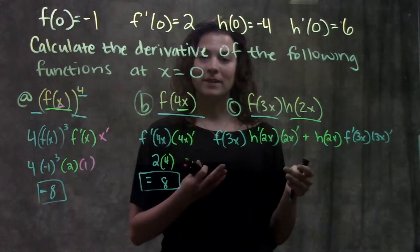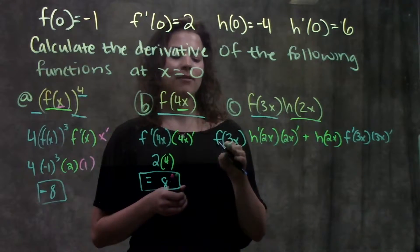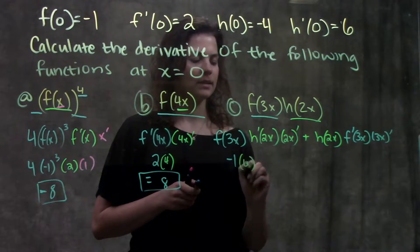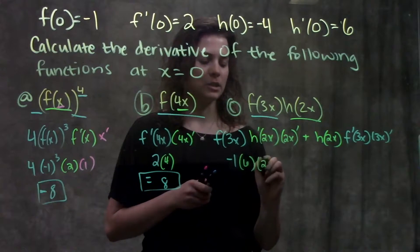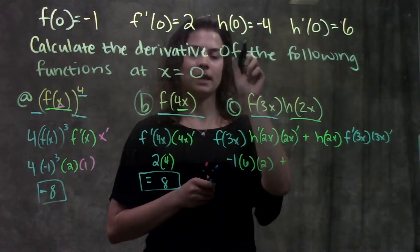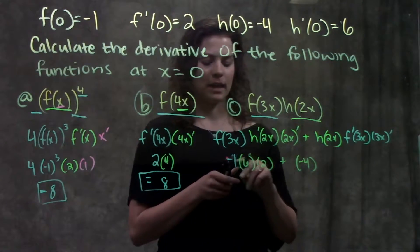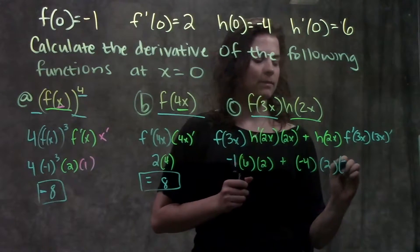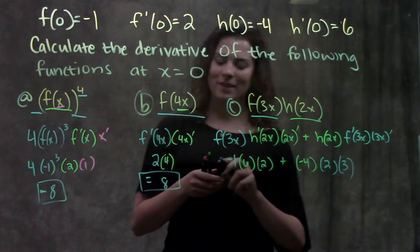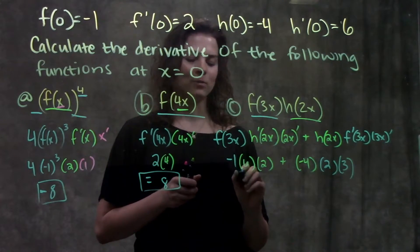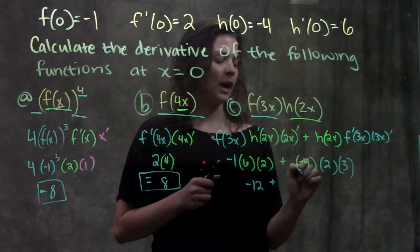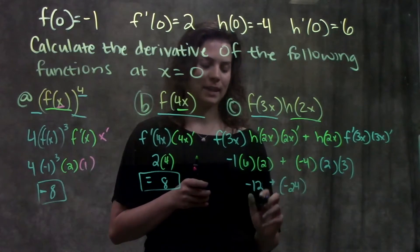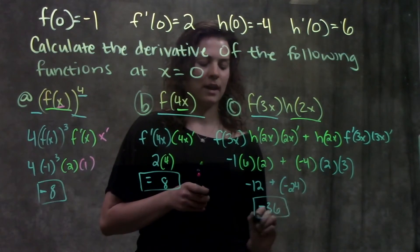Now I simplify and plug in my values. I have f of 3 times 0, or f of 0, which is minus 1, times h prime of 0, which is 6, times 2 — that's 2x prime evaluated as 2. Plus h of 0, which is minus 4, times f prime of 0, which is 2, times 3 — that's 3x prime evaluated as 3. Simplifying: minus 1 times 12 is negative 12, plus minus 4 times 6 is minus 24. Adding these together gives me negative 36 as my final answer.